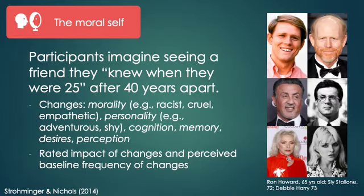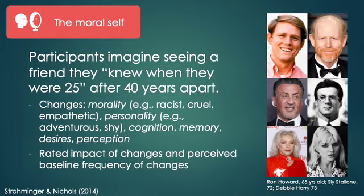Finally, Study 5 in this interesting set of studies is worth digging into. They used an imaginal exercise of aging to attempt to capture the passage of time. Participants imagined seeing a friend they knew when they were 25, after 40 years apart. They were given a list of changes the friend underwent, affecting aspects of morality—such as becoming racist, cruel, or empathetic—changes affecting personality such as becoming adventurous or shy, as well as changes to cognition, memory, desires, and perception.